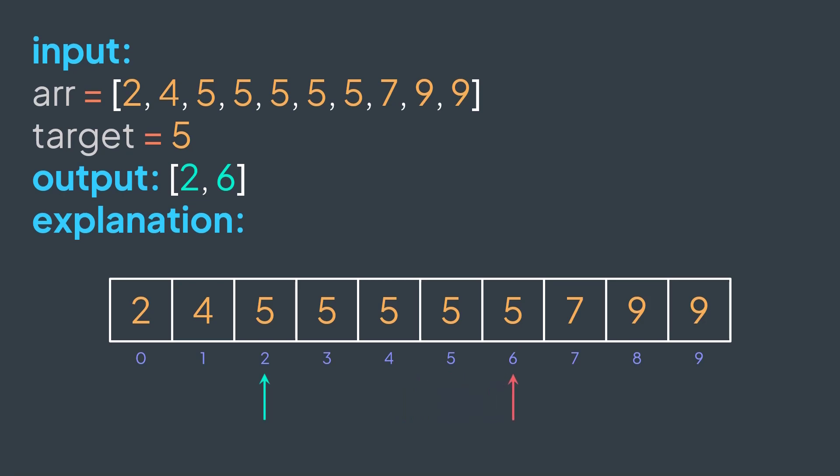With our example, we have 2, 4, then 5 — we found the first position. We keep walking: 5, 5, 5, 5 — this one is the last one. We found the end position and we return them.